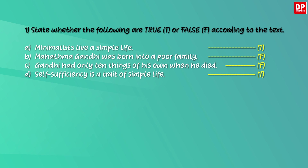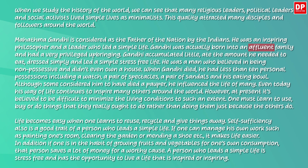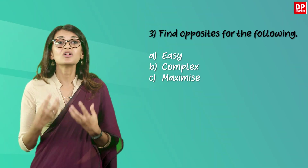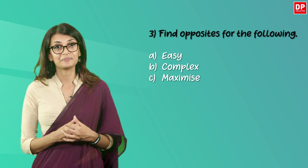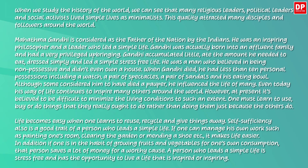Moving on, let's look at question number two — a question that will test applied vocabulary. Find similar meanings or words/phrases from the text for the following: 'wealthy' — affluent; 'collected' — accumulated; 'gains' — has the opportunity. Question number three is also a vocabulary question: you are asked to find the opposites of given words. 'Easy' — difficult or complex; 'maximize' — minimize.